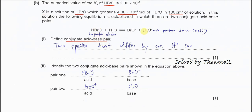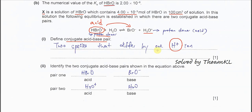In this reaction, HBrO is the species that donates a proton — we call it the proton donor, or acid. Water is the proton acceptor, which forms the hydronium ion. HBrO as the acid must have its own conjugate base, which is BrO⁻. The difference between HBrO and BrO⁻ is one proton. So a conjugate acid-base pair is two species that differ by one proton, or one hydrogen ion.